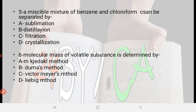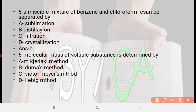Next: A miscible mixture of benzene and chloroform can be separated by — option A: sublimation, option B: distillation, option C: filtration, option D: crystallization. The right answer is option B, distillation.